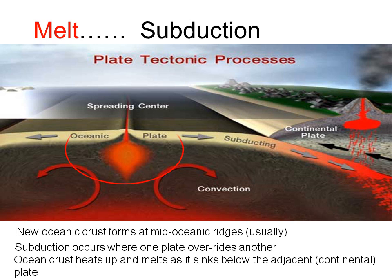Where plates diverge, mantle material wells up along the split and new oceanic crust is formed. Where plates converge, one plate is subducted under the other — usually the denser oceanic plate is subducted under a less dense continental plate. As it sinks into the hot mantle below, the subducted plate heats up and eventually partially melts, with a lighter molten product rising up into the overlying crust to accumulate in magma chambers and to form lines of volcanoes where they reach the surface.